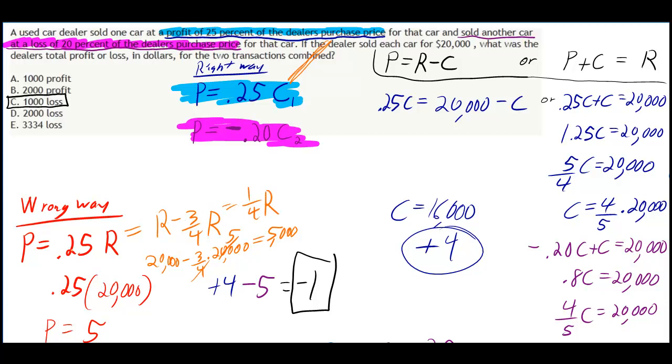So you really just had to do 1/4R. If you take 20,000 and multiply it by 1/4, you get 5,000 a little quicker with less calculation. But again, that's all wrong because you want to do 25% of the cost, not 25% of the revenue.